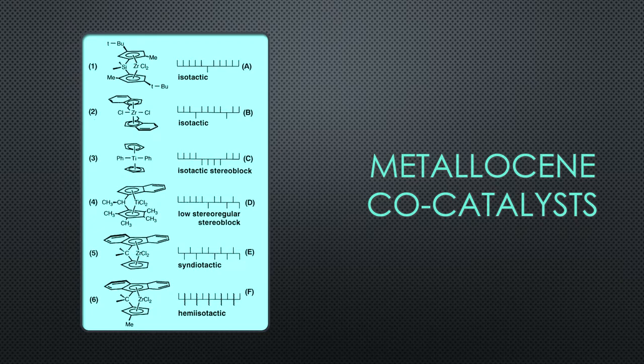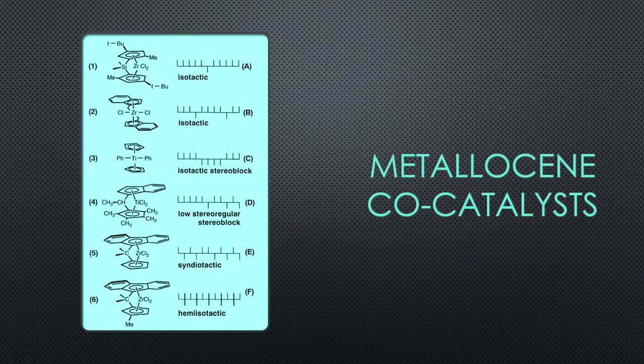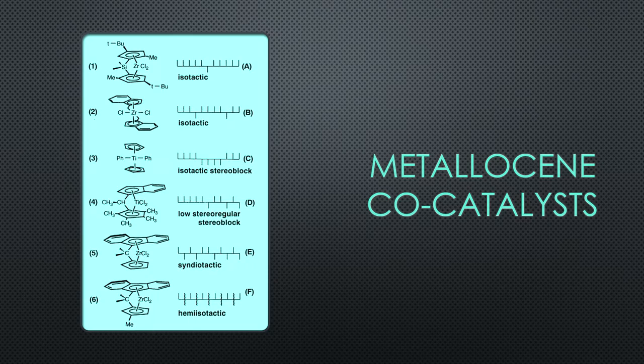Metallocene catalysts are known as single-site catalysts. Metallocene catalysts are soluble, and this facilitates the removal of catalysts. All metallocene catalysts share a transition metal sandwiched between two cyclopentadienyl rings, along with methyl aluminoxane, referred to as MAO. MAO is used to activate the metallocene catalyst. This allows for complexes between the metallocene and ethylene, forming a stereospecific polyolefin product, resulting in morphological tunability of the resulting polymer.